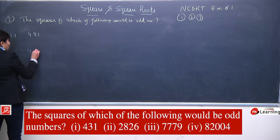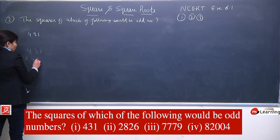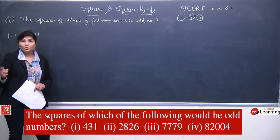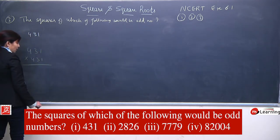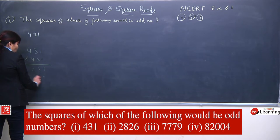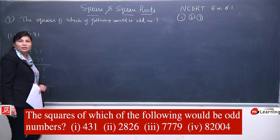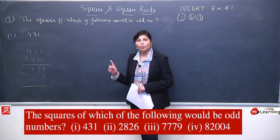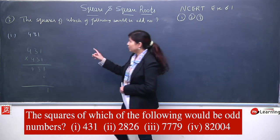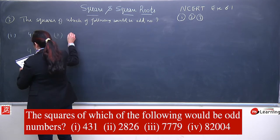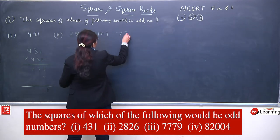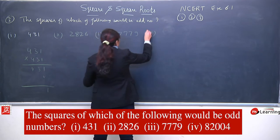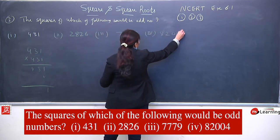The four parts of the third question are: first is 431, second is 2826, third is 7779, and fourth is 82004. We need to choose from these which ones will have an odd square. We don't need to multiply the whole number — we just check the last digit. When 1 is multiplied by 1, we get 1; 1 times 3 is 3; 1 times 4 is 4 — so the final answer's last digit will be odd.